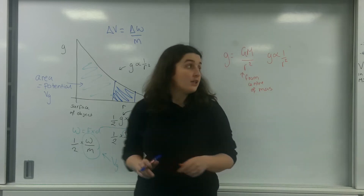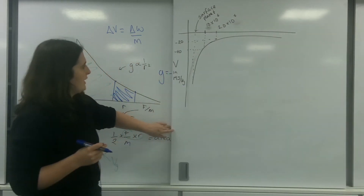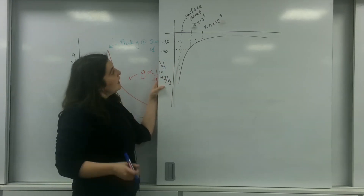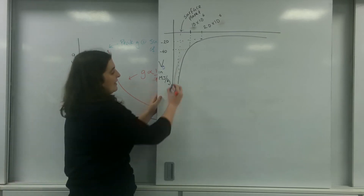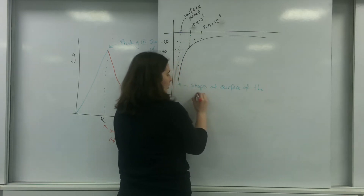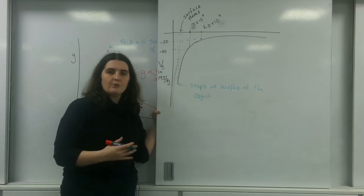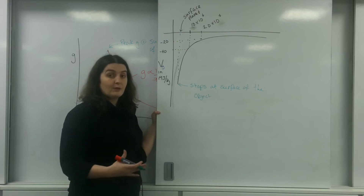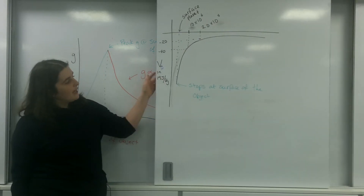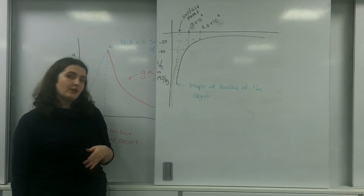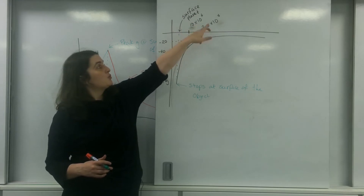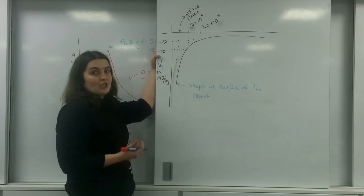Another graph that's important is a potential versus radius graph, and this is what one looks like here. This is potential in megajoules per kilogram. As you can see, it stops dead — because again, it stops at the surface of the object. The reason being that we can't use Newton's law of gravitation, the inverse square law rules, before the surface of the object, because g is not constant there. So I'm only looking at the region outside the surface. From this graph I could work out the change in potential between two points — for example, going from 1×10⁶ metres away to 20×10⁶ metres away.